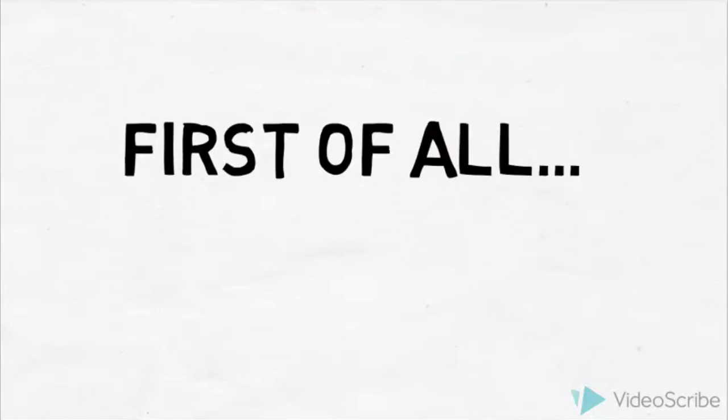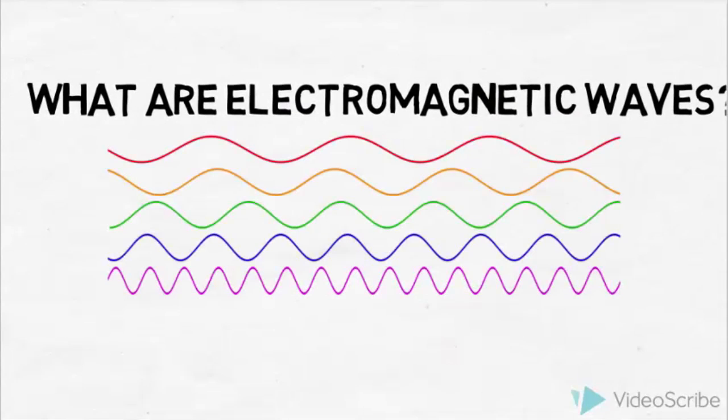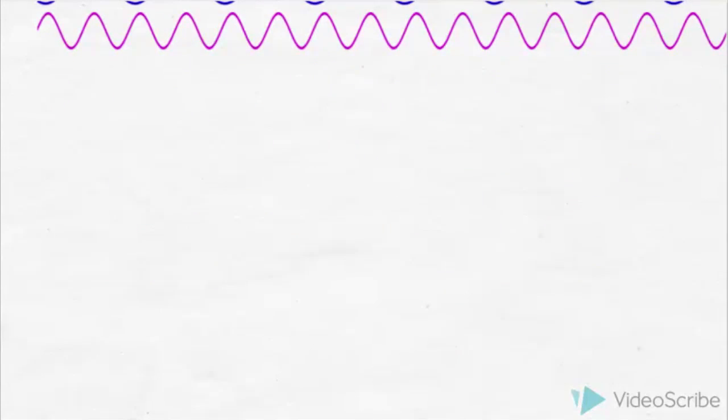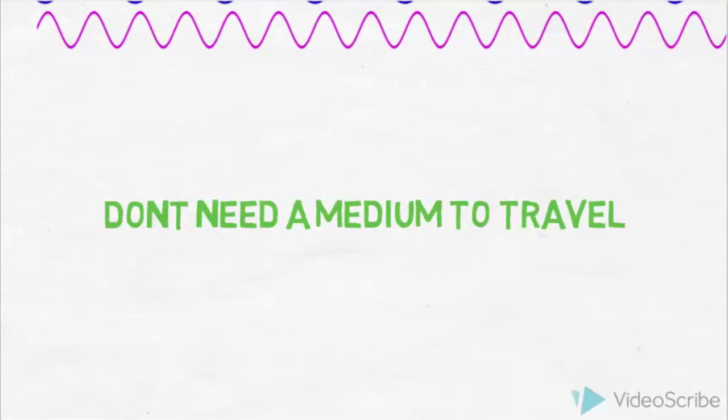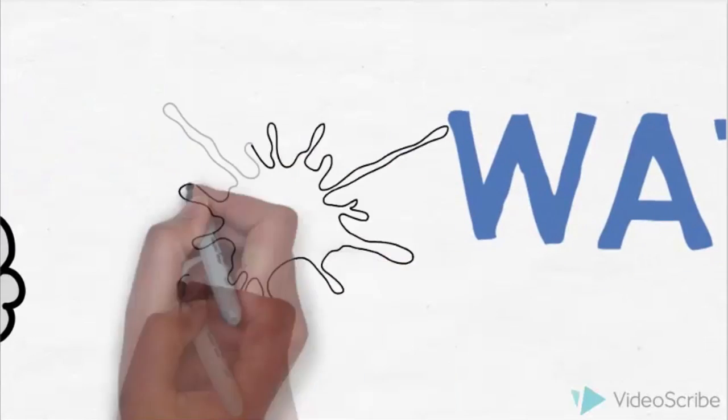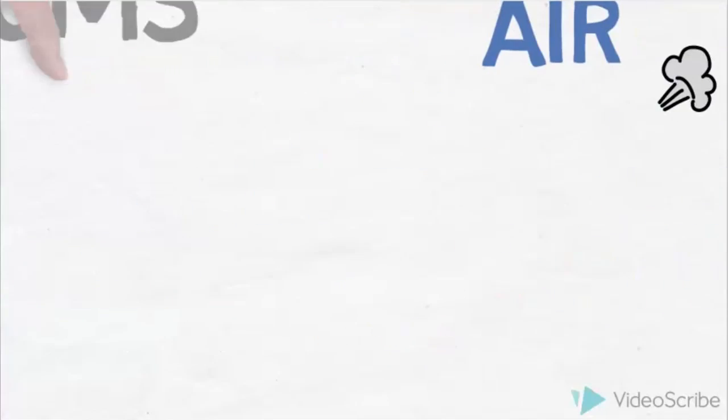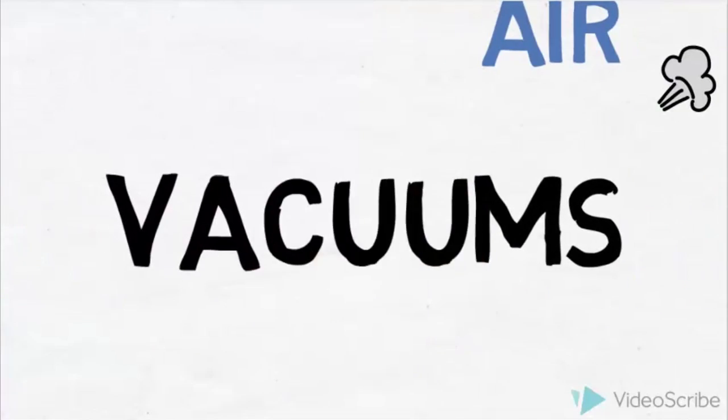First of all, what are electromagnetic waves? These are waves that don't need a medium to travel. Mediums such as air, water, and these waves can pass vacuums and space.